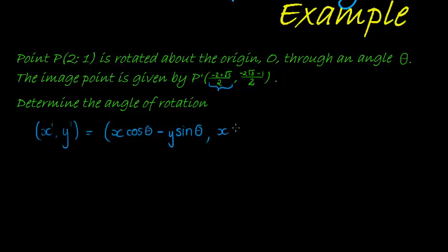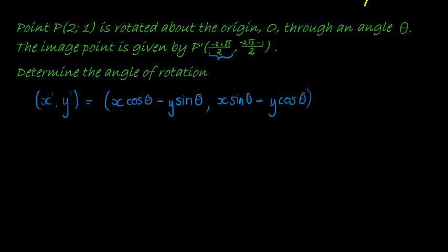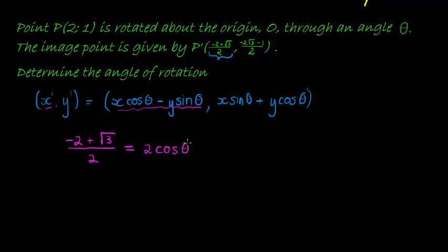For the y-portion, we have x sine of theta plus y cos of theta. As for whether it's clockwise or anticlockwise — we're not told, and it doesn't really matter. Once we get our answer, if it's positive we say anticlockwise; if it's negative, we say clockwise. So this means negative 2 plus square root of 3 over 2 equals 2 cos theta minus 1 times sine of theta. This is our first equation.